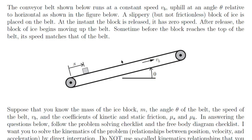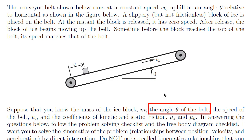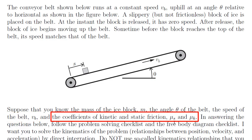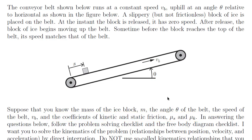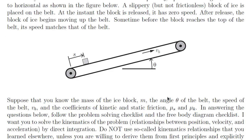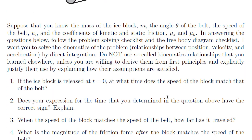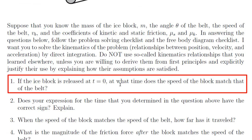It's slippery — it's sliding to begin with. Sometime before the block reaches the top of the belt, the speed of the block will match the speed of the belt. So we're given the mass of the block, the angle of the belt, the speed of the belt VB, and the coefficients of static and kinetic friction. We're also given G, the gravitational field constant. The first question: if the block of ice is released at t equals zero, at what time does the speed of the block match the speed of the belt?